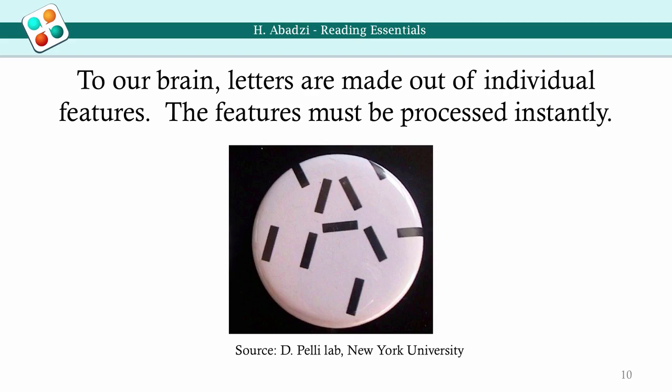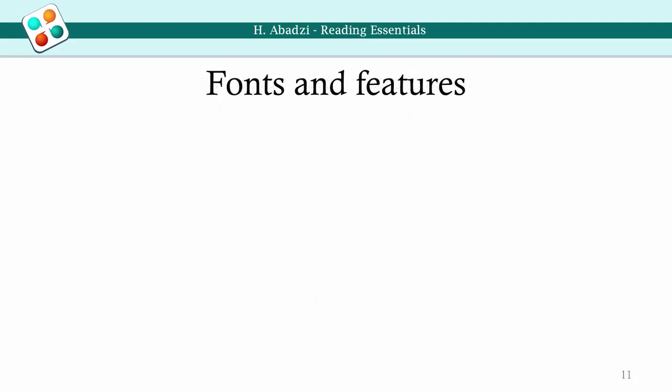Identification must be very fast, or the information in the sensory register will be lost. We read best with our central vision. In the periphery, the letters look crowded and unclear. Expert readers read four to five letters in the center of their vision, but beginning readers get only one or two letters. Long words without spaces slow down the reading rate, and in the beginning, letters must have space between them.